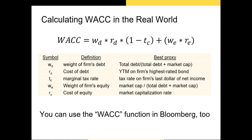We multiply the weight of debt by the cost of debt — the yield to maturity the firm can expect to pay if it issues a new bond, best proxied by the current YTM on the firm's most senior bond — then multiply by one minus the marginal tax rate, because interest on debt is tax-deductible. On the equity side, we multiply the weight of equity by the market capitalization rate, which is the expected return from the CAPM.